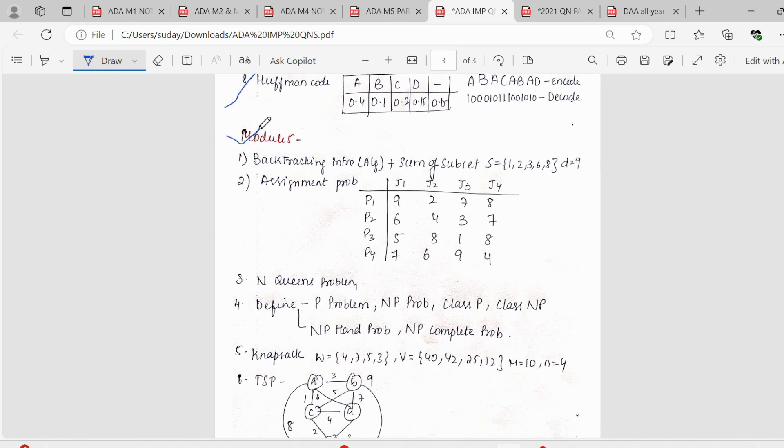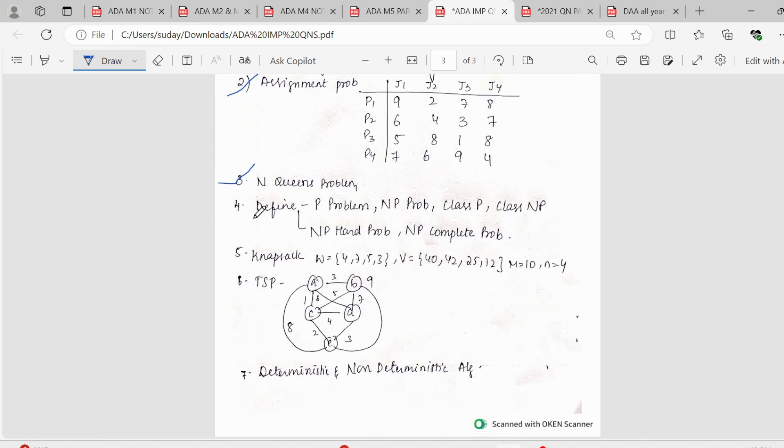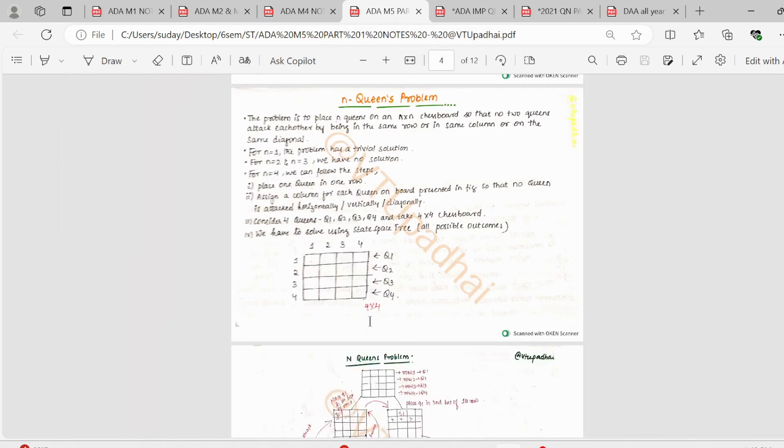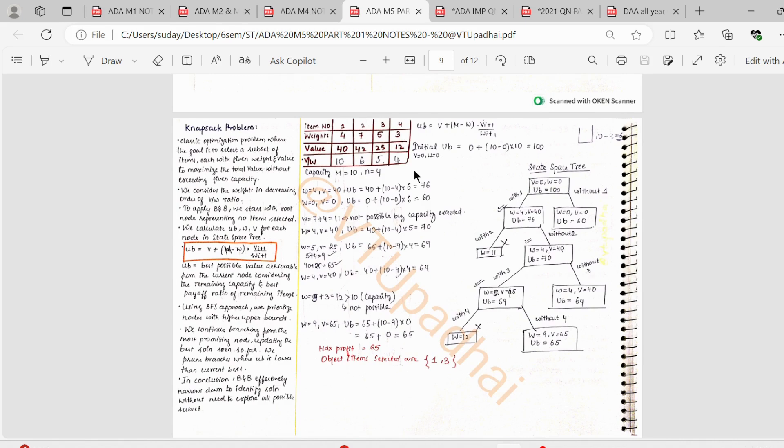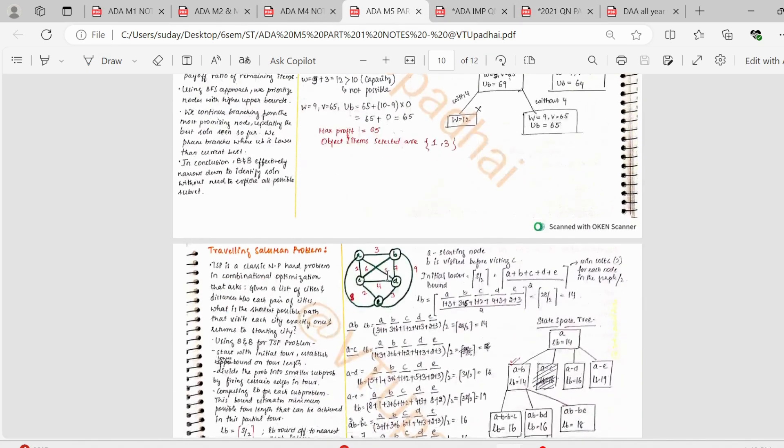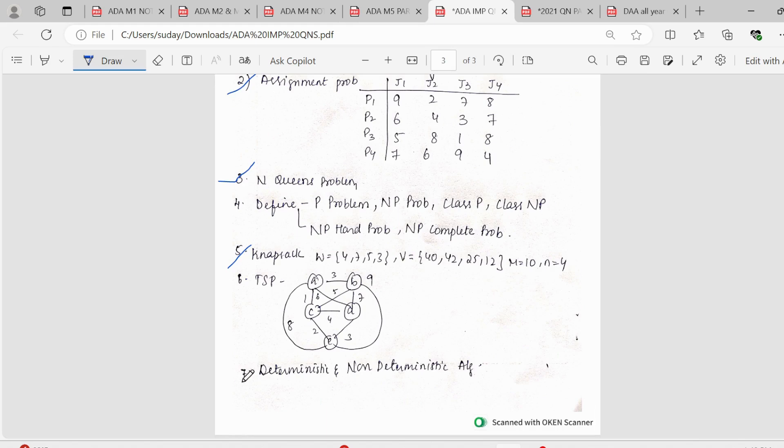Moving on to the fifth module. Fifth module, we have, it will be mostly theory because there are two chapters here. First chapter, introduction of backtracking algorithm could be asked. Then assignment problem, this is a must question, standard question. Then we have N queens problem again, depicting the N queens, drawing all those boxes and solving it. Next, we have the knapsack problem. Knapsack problem again, we make use of the optimization problem here. We make use of the upper bound value and all of the calculation part. Then coming to the TSP problem. Again, TSP problem also we make use of the calculations initial, lower bound, upper bound, all those things, state space tree. Then definition of deterministic and non-deterministic algorithms. Then define P problem, NP problem, class P problem, class NP, NP hard problem, NP complete problem.